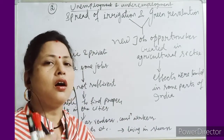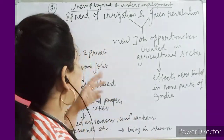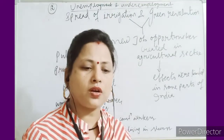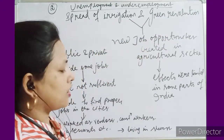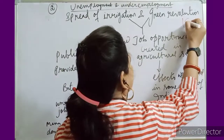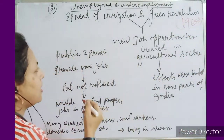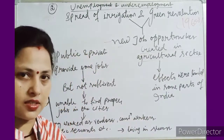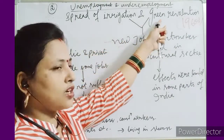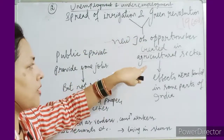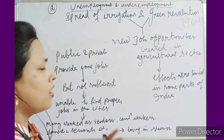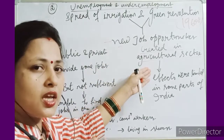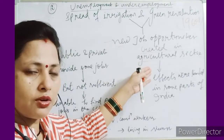The second cause is unemployment and underemployment. With the spread of irrigation and the Green Revolution in the 1960s, some new job opportunities were created in the agricultural sector. However, when new jobs were created, unfortunately this effect was only in some parts of the country, not everywhere.